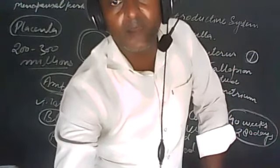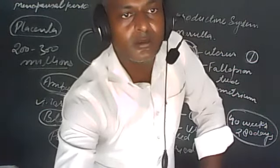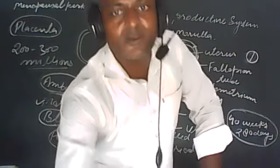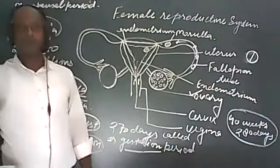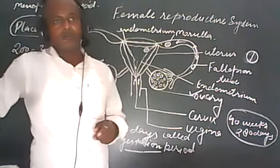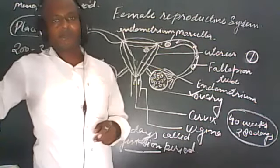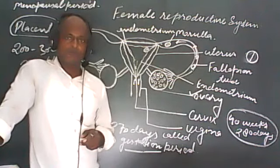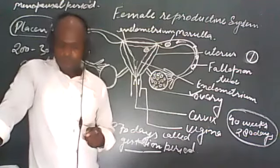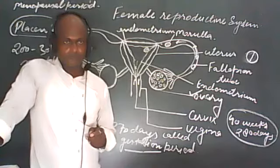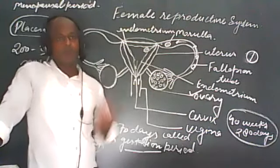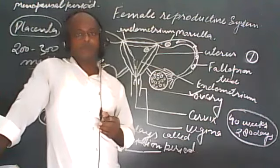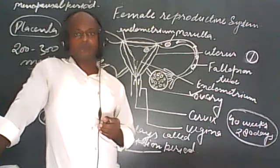Now I'm going to unmute all of you. If you have any questions or confusion, you can ask one by one. A student asks: in how many days does the endometrium form again? Answer: after every 28 days, the endometrium begins to form again.